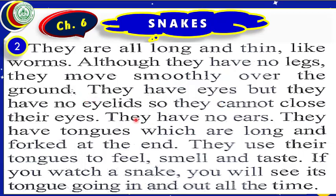They have eyes but they have no eyelids, so they cannot close their eyes. They have no ears. They have tongues which are long and forked at the end. They use their tongues to feel, smell, and taste. If you watch a snake you will see its tongue going in and out all the time.